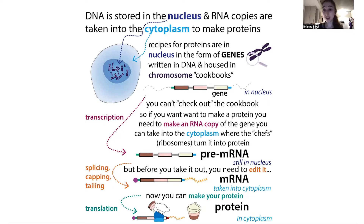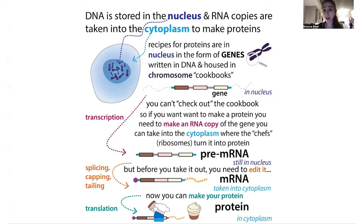You can think of it like the restricted section of a library where they keep references — you can't actually check out the dictionary, but you can make copies of the pages. Similarly, your cells can make copies of this permanent DNA gene recipe in the form of RNA.